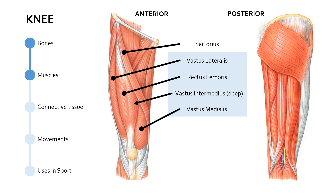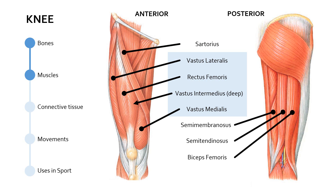Looking at the posterior portion of the upper leg, we've got the semimembranosus and semitendinosus — two of the three hamstring muscles. Because this is the right leg, these muscles insert on the medial side of the lower leg, whereas the third hamstring muscle, the biceps femoris, inserts on the lateral side of the lower leg. So although they have similar roles, they don't do exactly the same thing due to their slightly different insertion points.